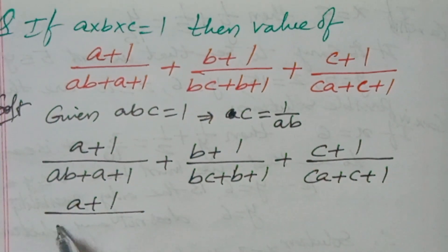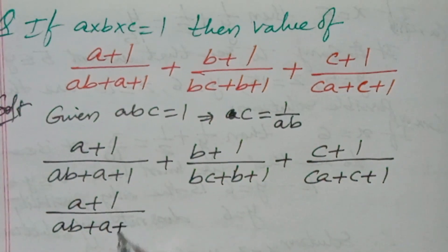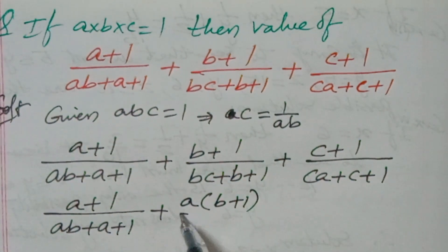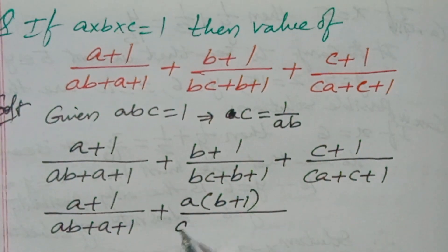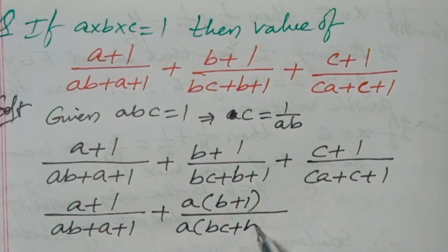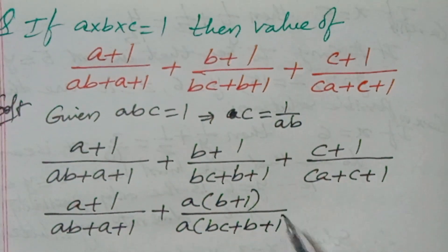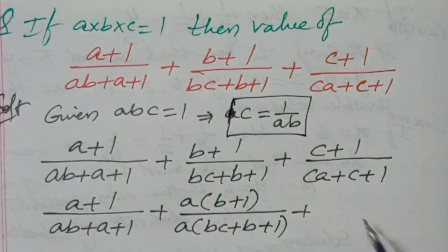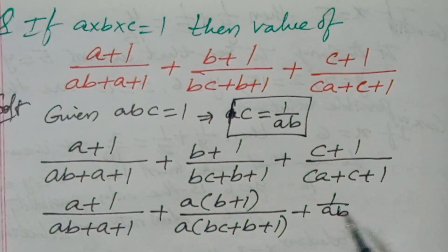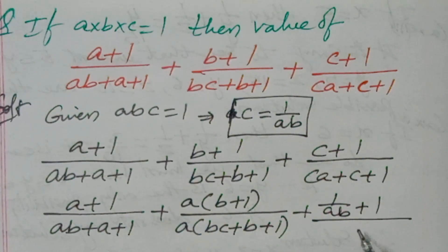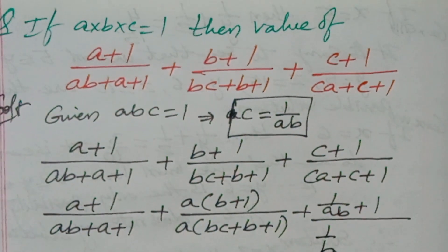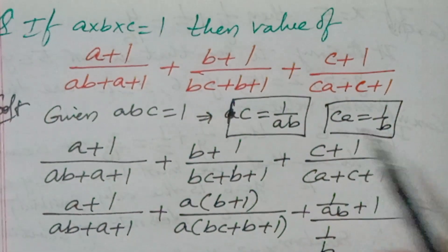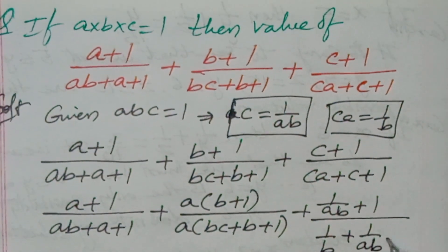a plus 1 by ab plus a plus 1. Now the second one, multiply with a, numerator and denominator multiply with a. So here you'll get a into bc plus b plus 1, plus here in the place of c write this value: 1 by ab plus 1 by b. So here ca will be 1 by b, plus c value 1 by ab plus 1.